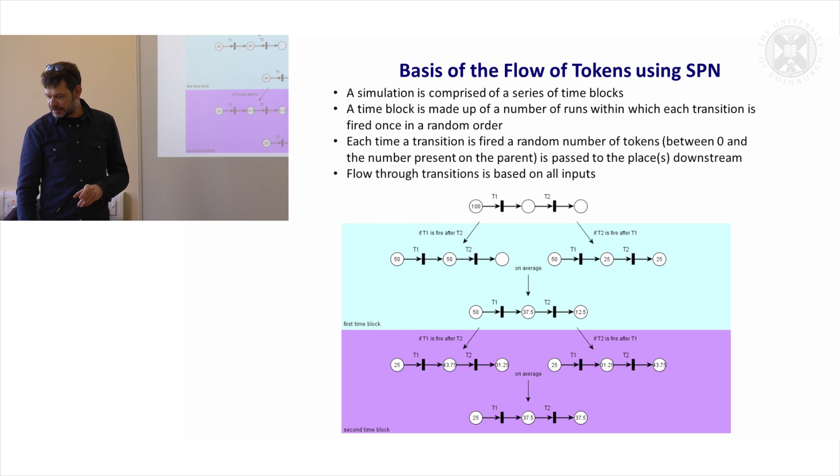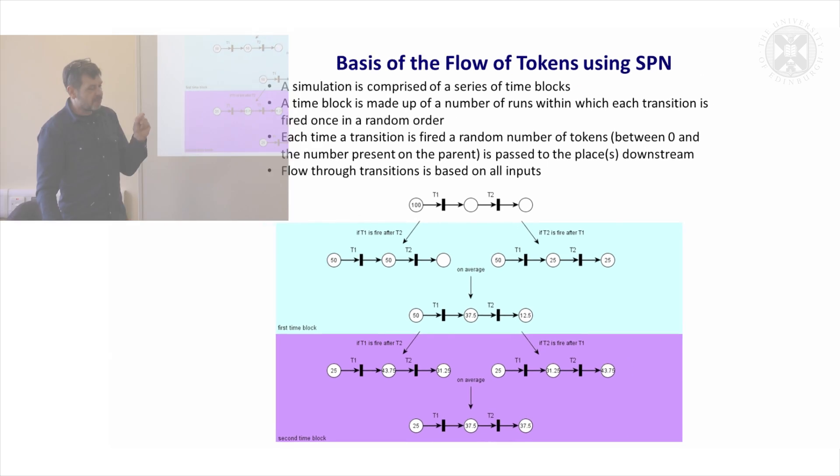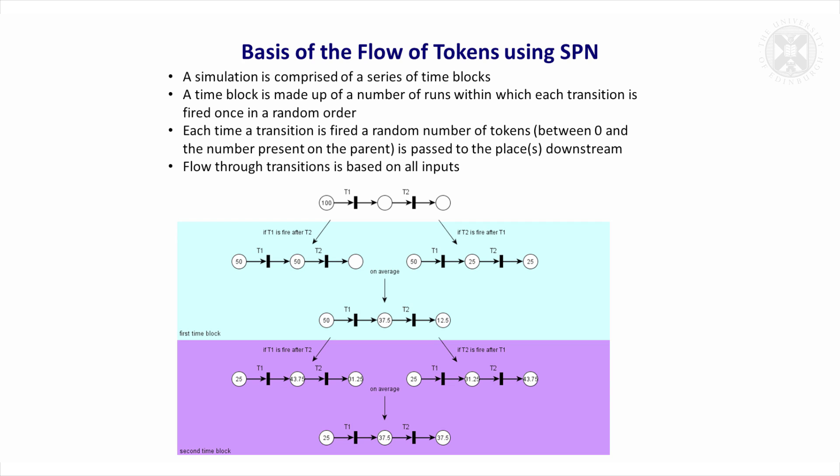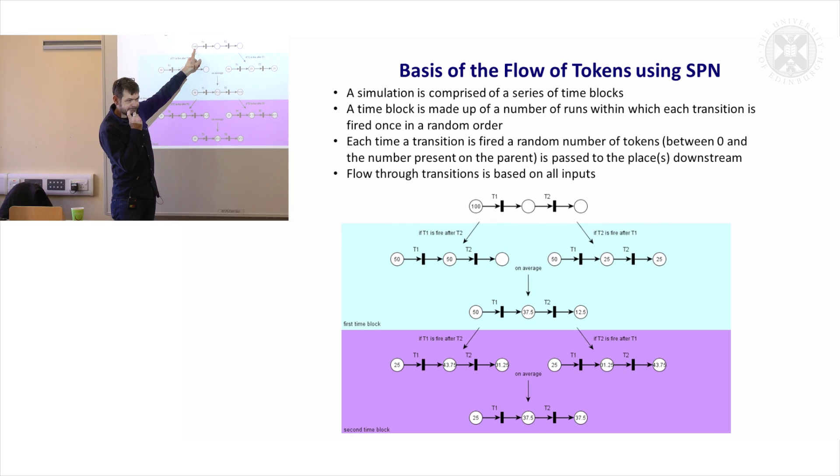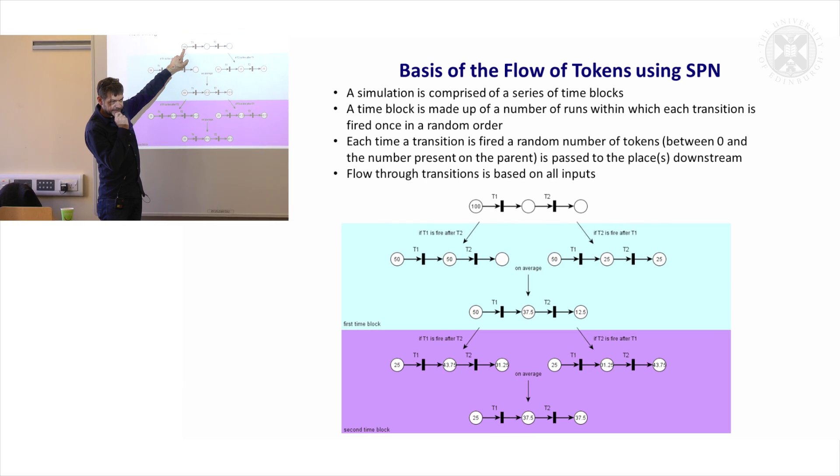So I just want to spend one moment trying to show a little bit more about the logic behind what we're doing. I'm not really expecting you to get this, but I just want to at least attempt to explain it. So imagine we have a network of three nodes and two transitions. We have a hundred tokens here.